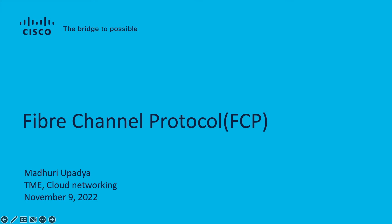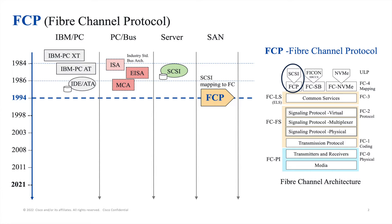Hello everyone, welcome to the short videos where we talk about SAN concepts. Today's topic is Fibre Channel Protocol or FCP. Fibre Channel is the original SAN protocol. It's been around for more than 20 years and is still a very popular storage protocol. Fibre Channel is different than Ethernet on every level of the protocol stack and is dedicated to storage traffic only, not to data traffic.